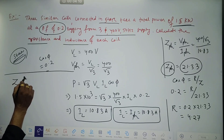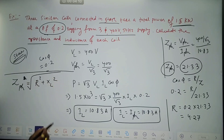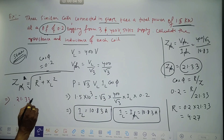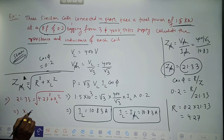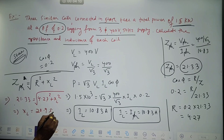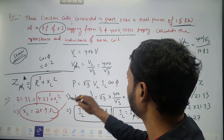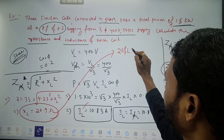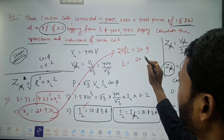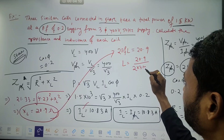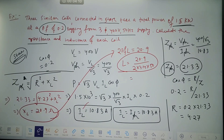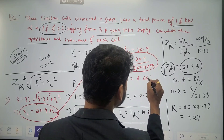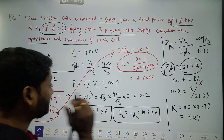Next we find inductance. Z_phase squared equals R squared plus XL squared. Z_phase is 21.33 and R is 4.27, so squaring both sides we can find XL. XL comes out to 20.9 ohms. Since XL equals 2 pi f L, inductance L is 20.9 divided by 2 pi times 50, where pi is 3.14. You can calculate this to get L equals 0.0665 Henry.